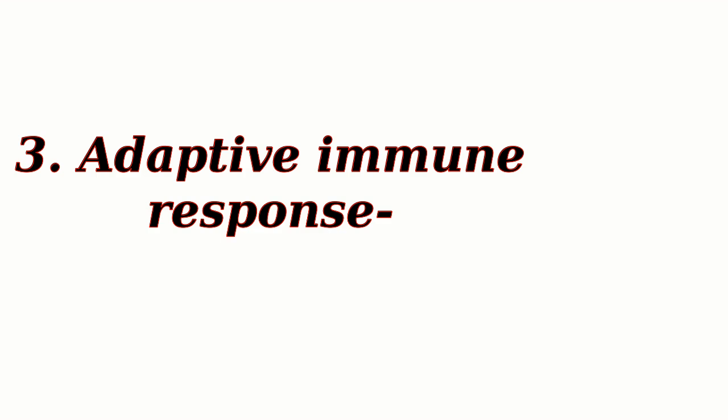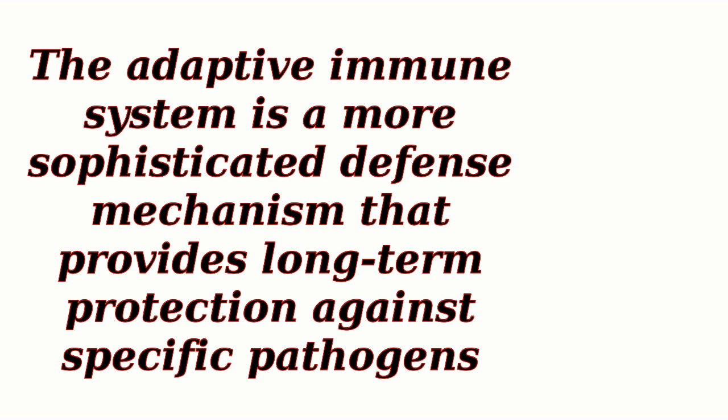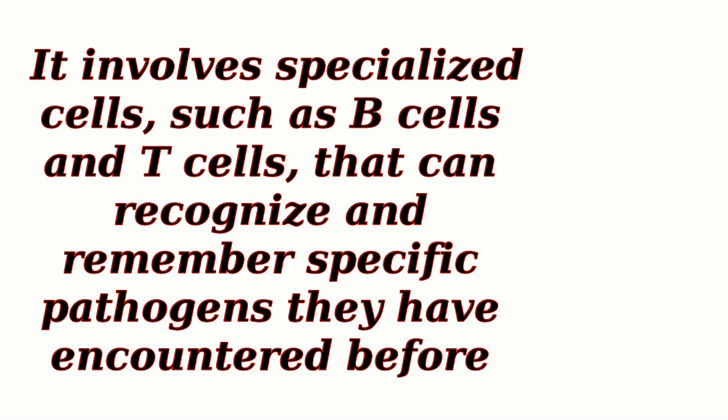Adaptive immune response. The adaptive immune system is a more sophisticated defense mechanism that provides long-term protection against specific pathogens. It involves specialized cells, such as B cells and T cells, that can recognize and remember specific pathogens they have encountered before.